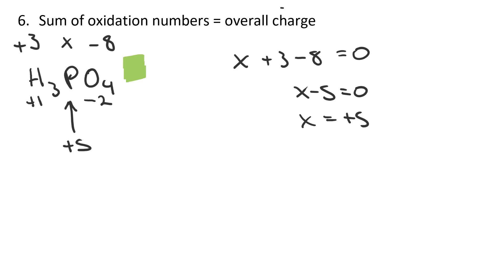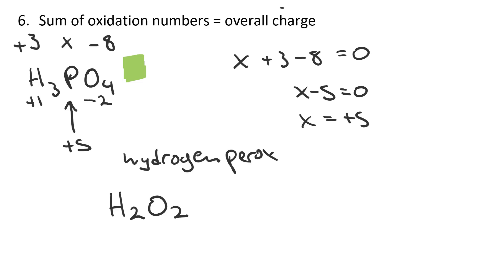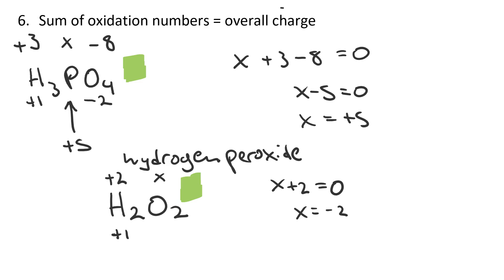The overall charge can be found by inspection — if nothing is written, it's zero. Now let's look at hydrogen peroxide again, H₂O₂. Hydrogen is dealt with first — it's plus one, and two of them contribute a total of plus two. The overall contribution from oxygen, x, must satisfy x plus two equals zero (the overall charge). Therefore x equals negative two. That means the individual oxidation number on each oxygen in hydrogen peroxide is negative two divided by the subscript two, which is negative one.